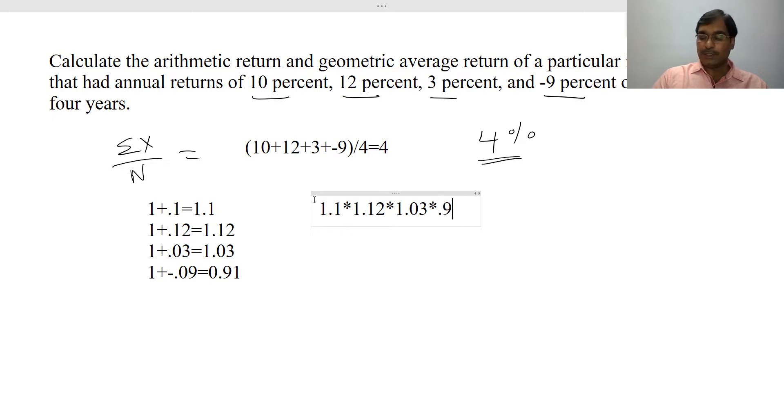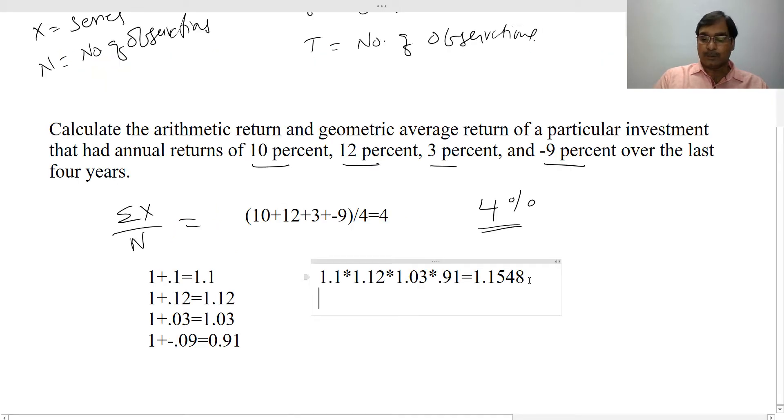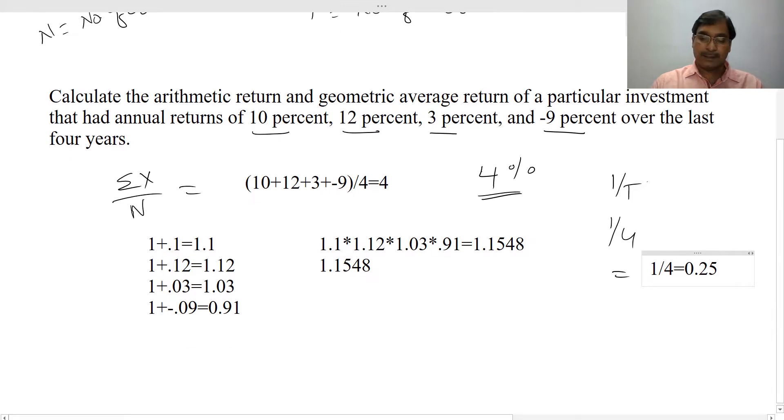The product value is 1.1548, and then your equation is 1 by t, so 1 by 4, which is 0.25. Then use this value in the equation: 1.1548 raised to the power of 0.25 minus 1.